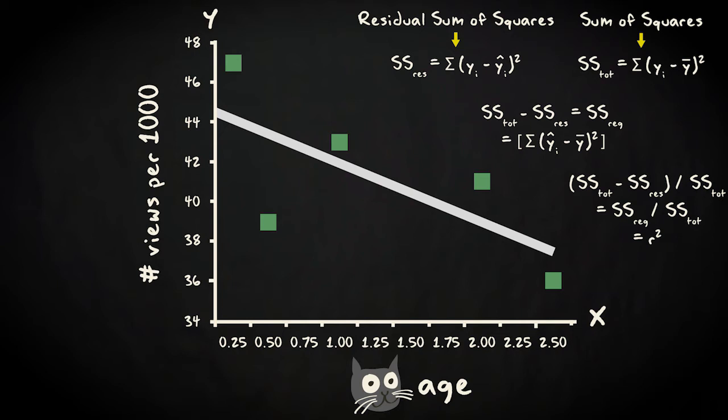We can visualize this as the part of the variation around the mean explained by the regression line. In simple linear regression, you can find this proportion by manually calculating the total and residual sum of squares, or you can simply square the correlation. Both methods give the same results.